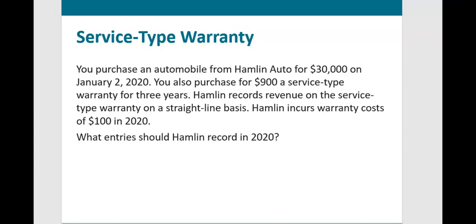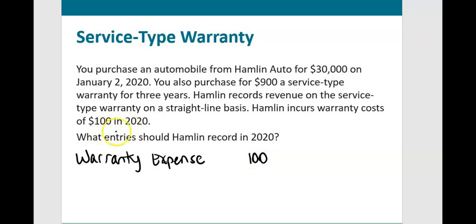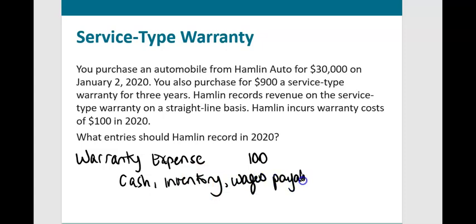Hamlin incurs $100 of warranty costs during 2020. At the time the actual costs are incurred, the company records warranty expense of $100, crediting cash, inventory, or salaries payable. If the company incurs costs in 2021 — say another $300 — that will be an expense in 2021. We don't need to estimate the total expense in the year of sale the way we do with an assurance type warranty.